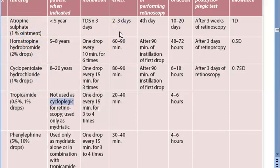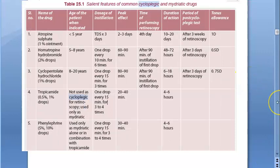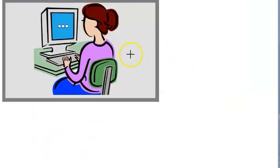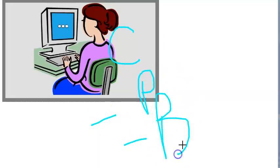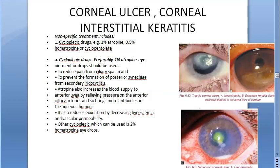Atropine is given as ointment for children less than five years, and does not need to be given repeatedly because it is long-acting — typically three times daily for three days. The other drops require instillation every ten to fifteen minutes. Cycloplegics are also used before retinoscopy to find out the refractive power of the eye. The two main uses are: to relieve pain and muscle spasm, and before retinoscopy for refractive assessment.